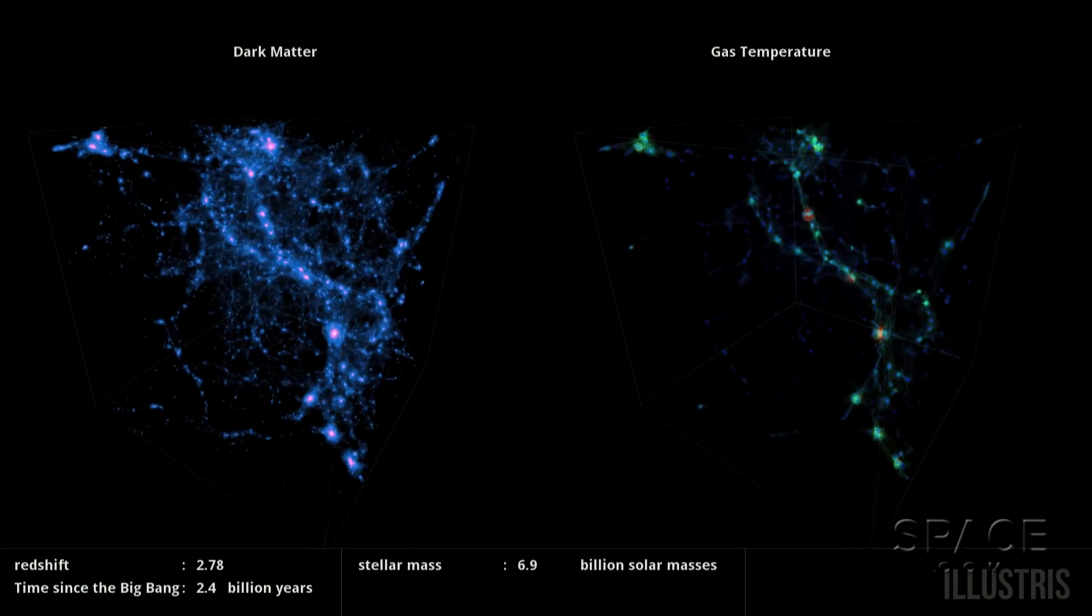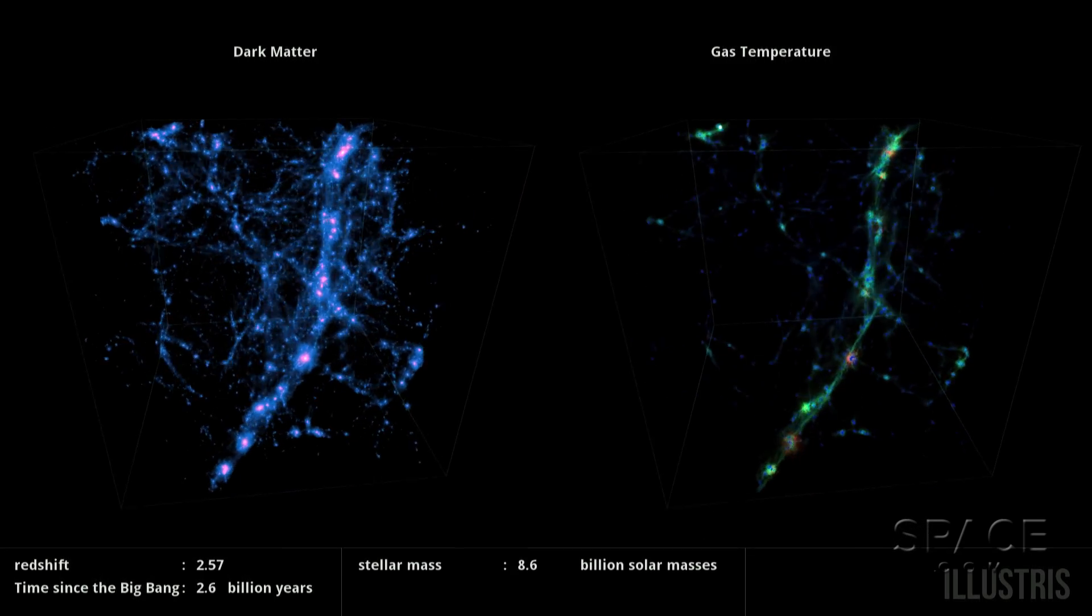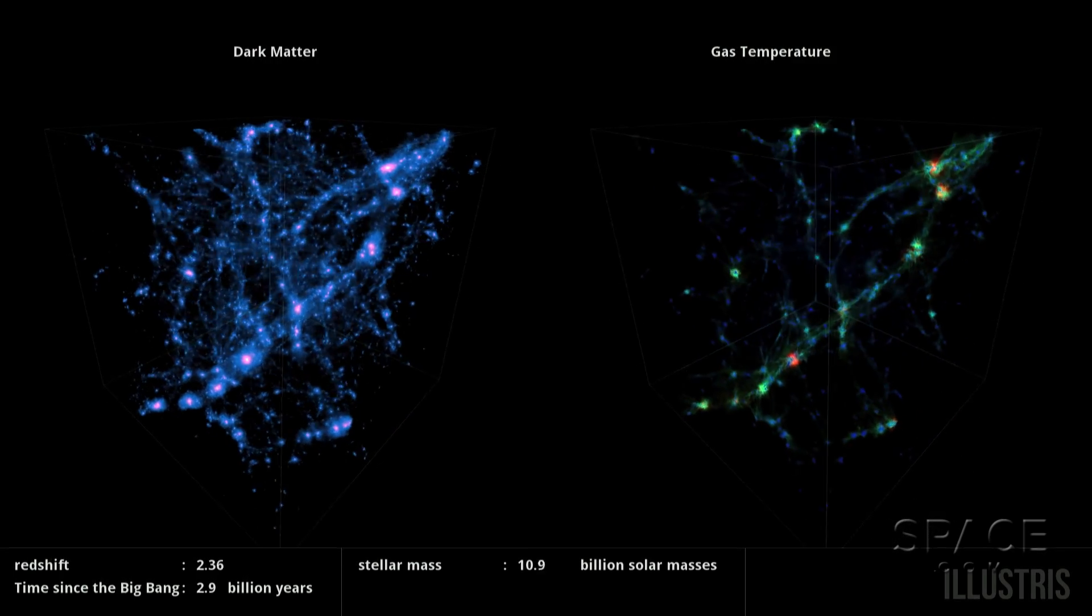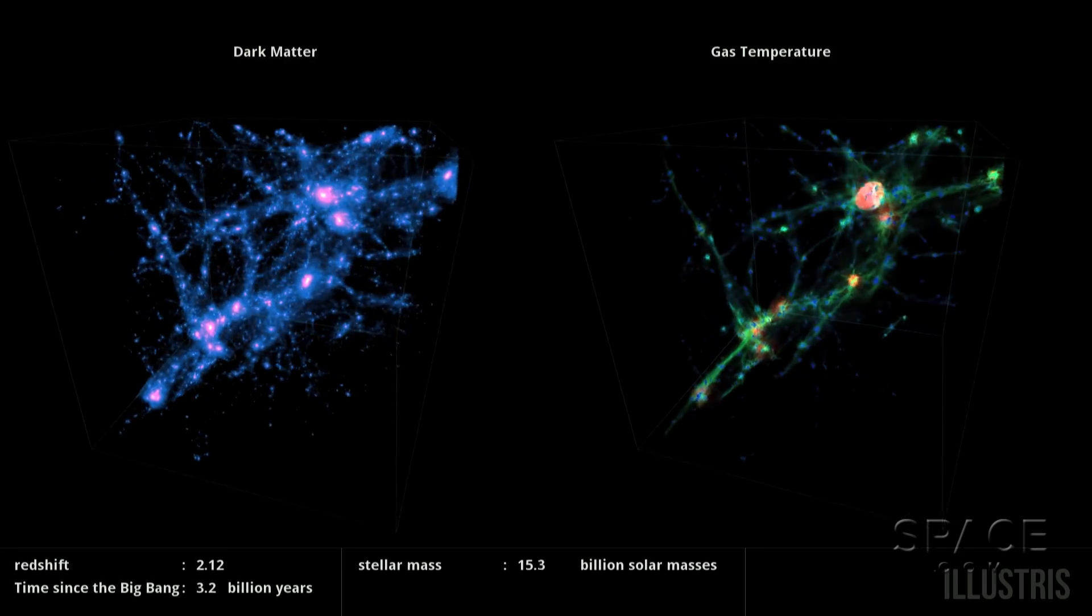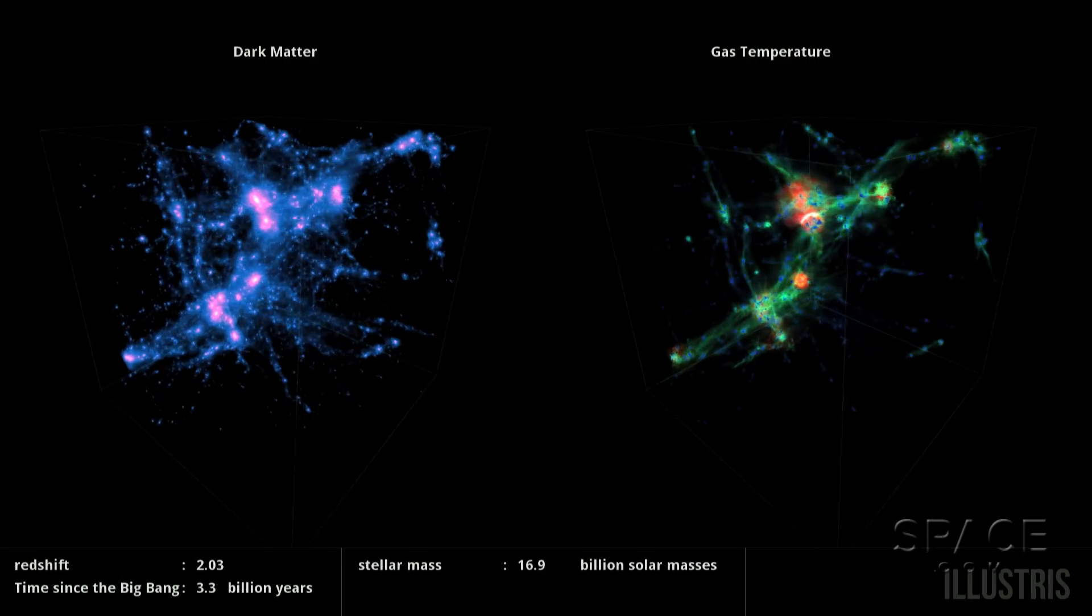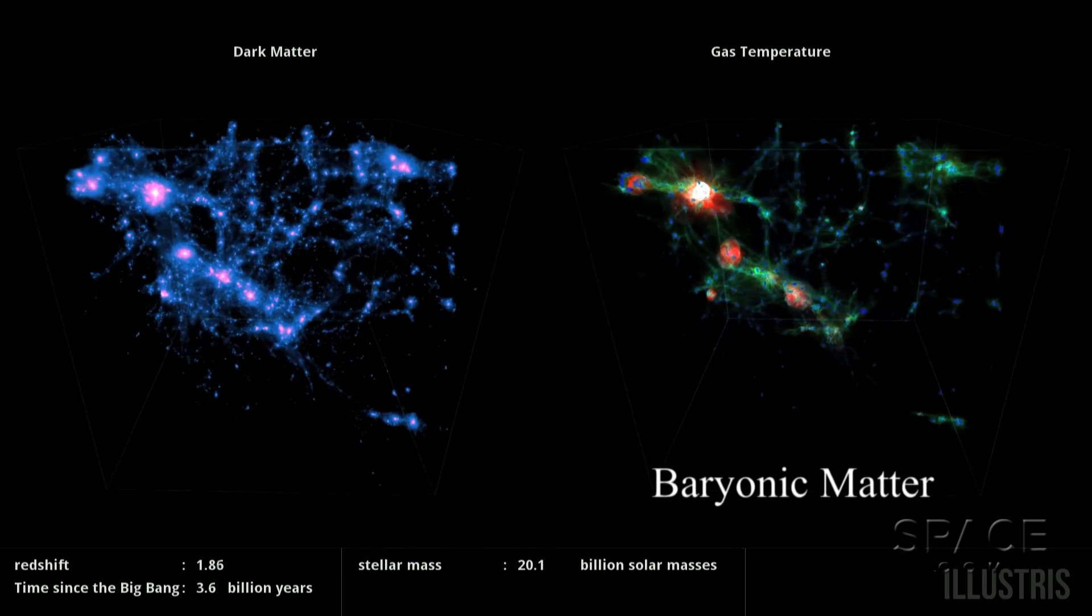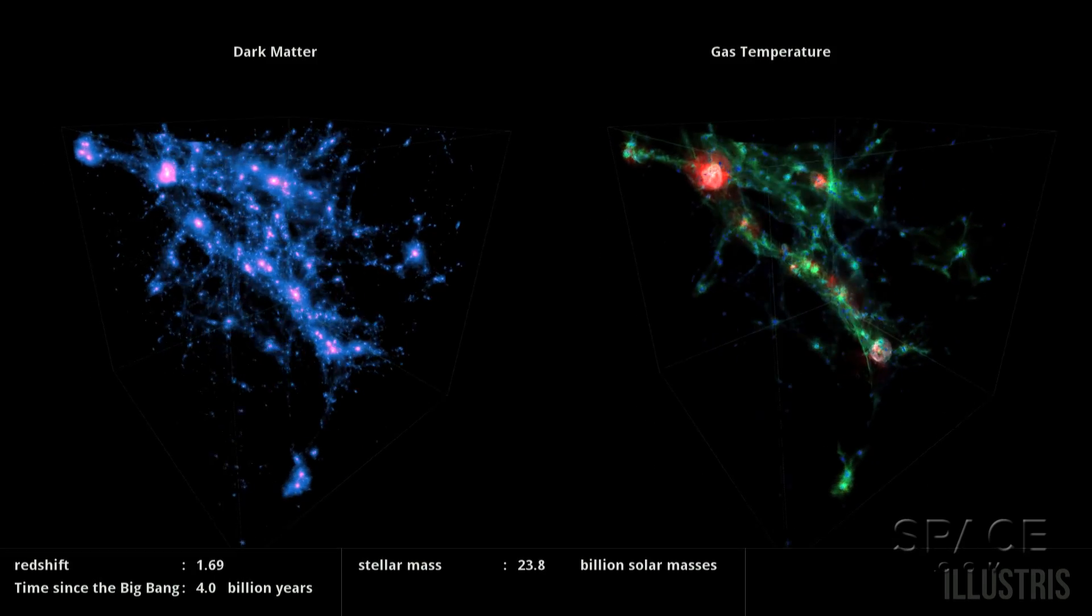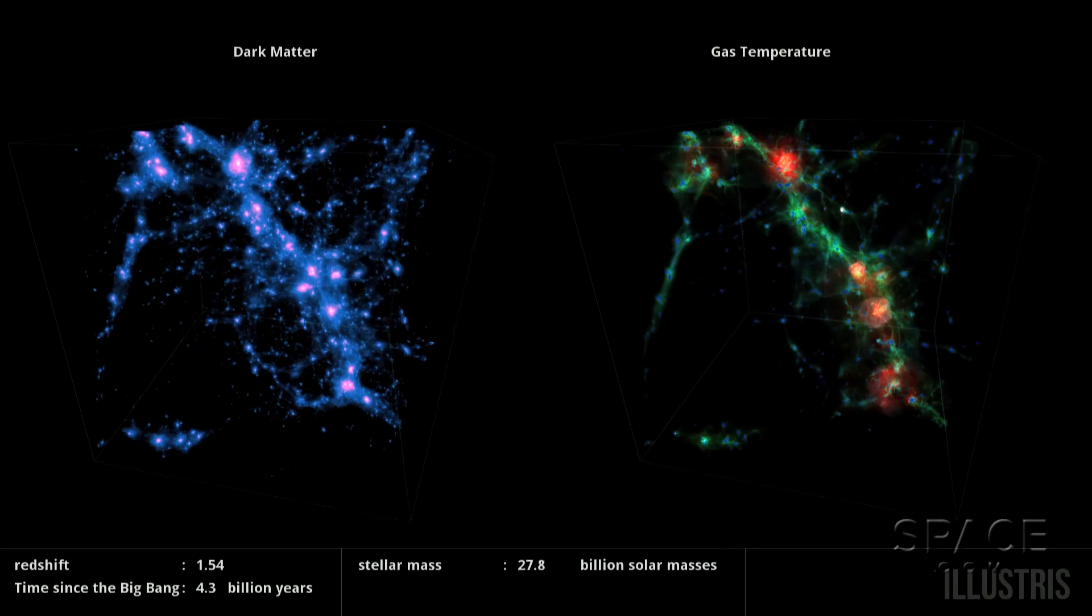Now we watch the goings-on within a cube of space. Both sides show the same region. But on the left, it is as if we've put on a pair of special glasses which let us see dark matter by its density variation. On the right, we're watching the gas temperature of normal baryonic matter. And that flickering is the product of active galactic nuclei cycling through their quasar phases.